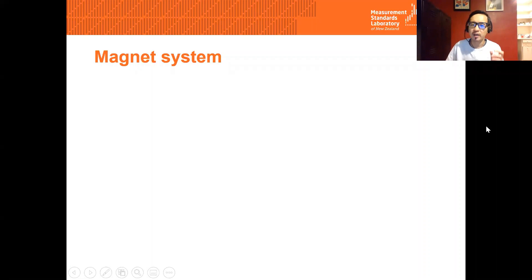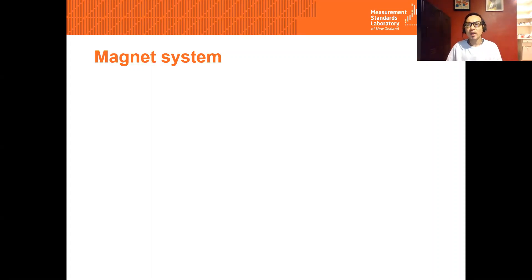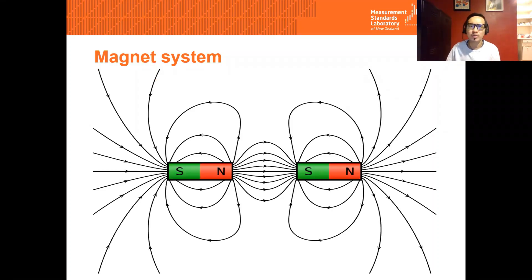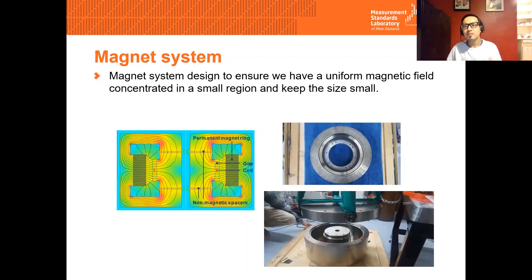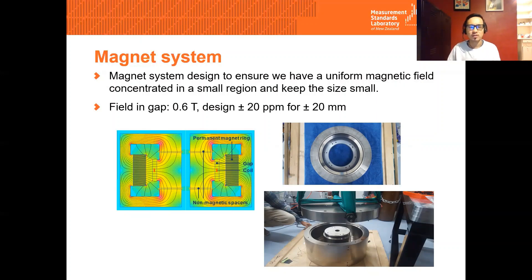One of the critical requirements for a Kibble Balance is to have a strong and highly uniform magnetic field where the coil moves through. The easiest way is to have big magnets, but that would not be practical — too big and too expensive. Instead, we can make a magnet system consisting of a ring permanent magnet and a yoke of soft magnetic material, put them together to create a magnetic circuit with highly uniform magnetic field at the coil region. Our magnetic field strength is 0.6 tesla and has high uniformity. Having the magnet entirely enclosed by the yoke also screens the magnetic circuit from outside magnetic interference.